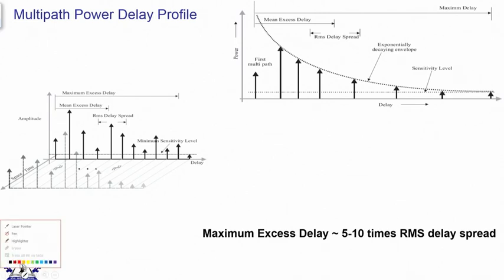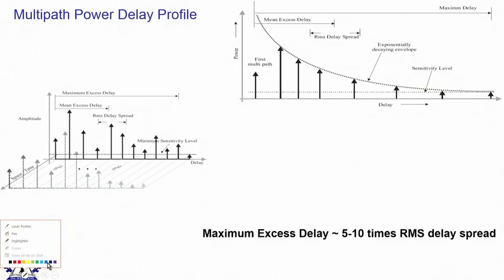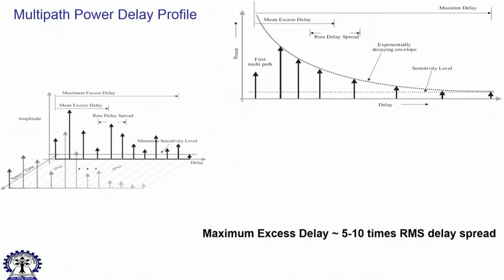We have discussed frequency selectivity in the previous lecture, and we need to take a further look at some additional things when we combine different aspects together for different channels. We will get a profile better described in this image. What we have essentially is a situation where an impulse is launched and we get echoes at different delays, which gives rise to — if you plot in the frequency domain — frequency selective characteristics.